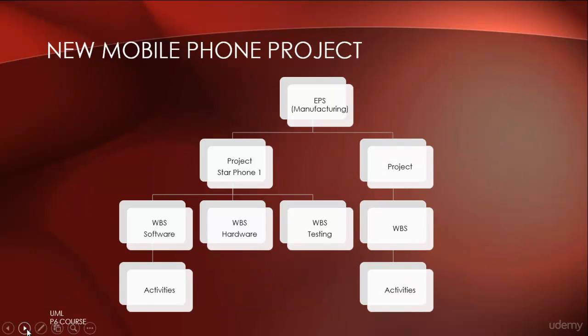In this figure, I have shown you how projects are structured in Primavera P6. Let's say we have an EPS called Manufacturing, and under this EPS we have various projects — say one project is Star Phone One. Under this project, we have different WBSs of software, hardware, and testing, and under each WBS we have different activities. The activities sum up to their parent WBSs, which sum up to higher WBSs and finally to the project level. In our next lecture, we will learn how to create a project in Primavera P6.